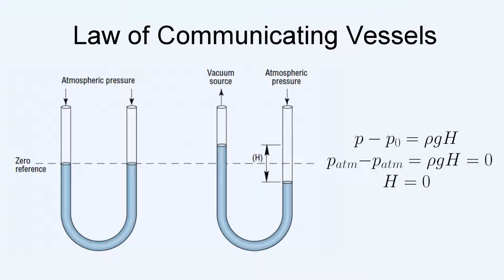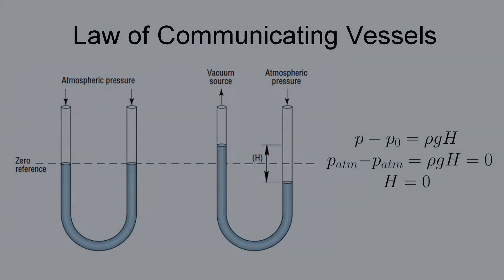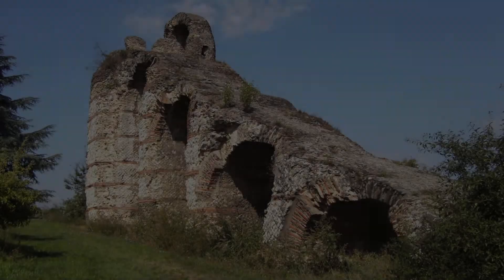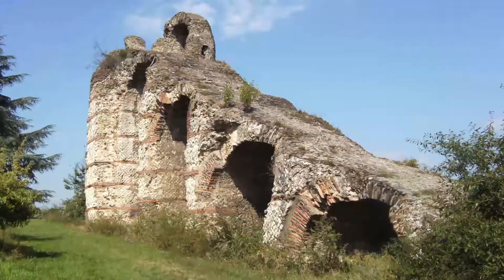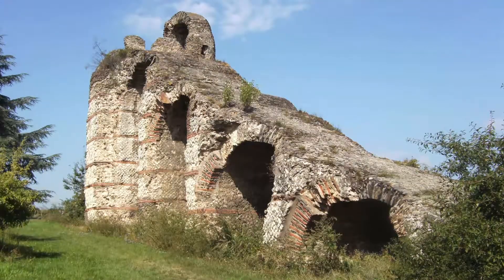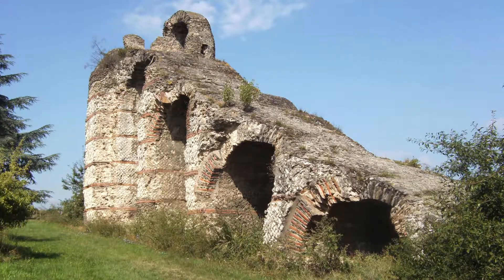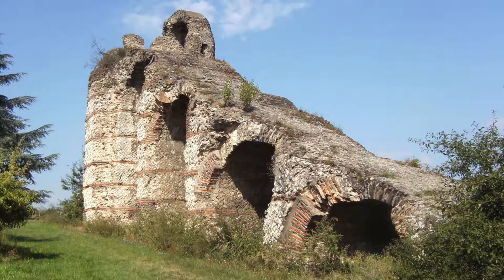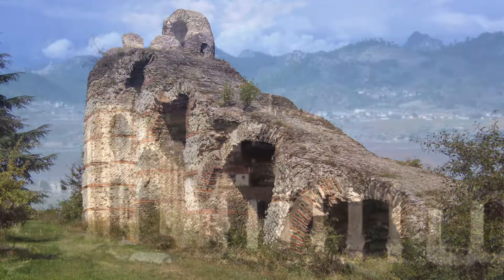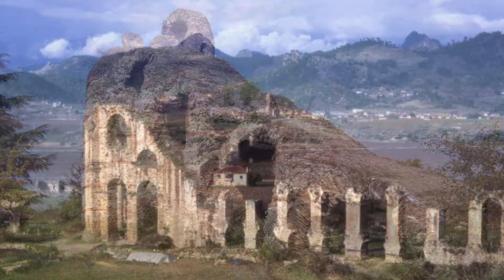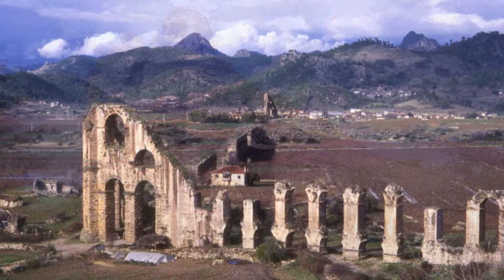Essentially, water in a U-shaped pipe will be at equal levels on both ends. Using this knowledge, inverted siphons were built to channel water through depressions. Water entering from the aqueduct's open-air channel is initially collected at the header tank. Pipes from the tank carried the water down and then back up the valley to an exit basin on the other side.